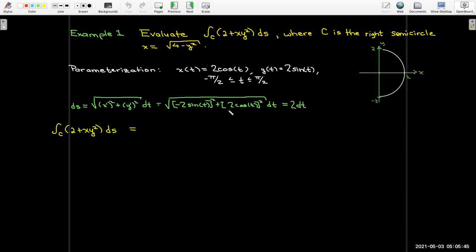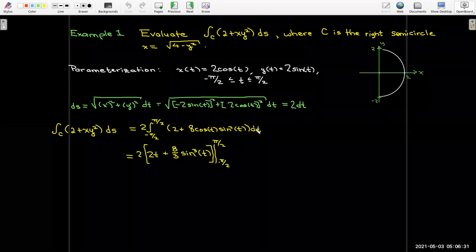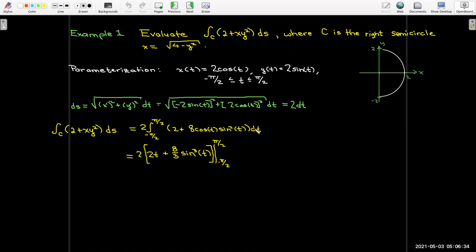My line integral over the curve c is going to be the integral from -π/2 to π/2. Remember, these are my bounds on the parameter t. In the integrand, I'm going to replace x with 2cos(t), y with 2sin(t). So when I square that, I would get 2cos(t) times 4sin^2(t), or 8cos(t)sin^2(t). And then ds we found to be 2dt. I'll pull that constant multiplier 2 out in front of the integral, and then let's evaluate it.